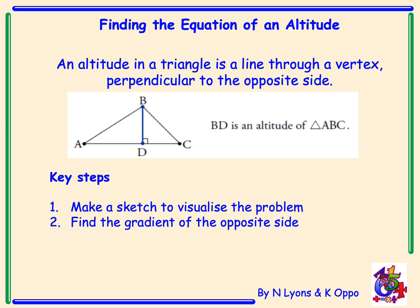Find the gradient of the opposite side. Use your perpendicular rule, m1 times m2 equals negative 1. And finally, y minus b equals m bracket x minus a.